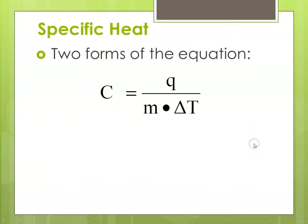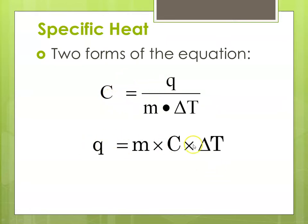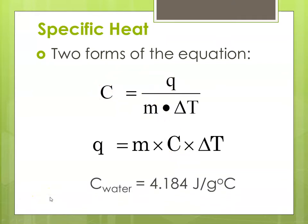There are two forms of this equation: Q equals MC delta T, or rearranged, C is equal to Q over M delta T. If we're solving for Q, it's MC delta T. If we're solving for C, it's Q divided by M delta T. The specific heat of water is 4.184 joules per gram degree C.